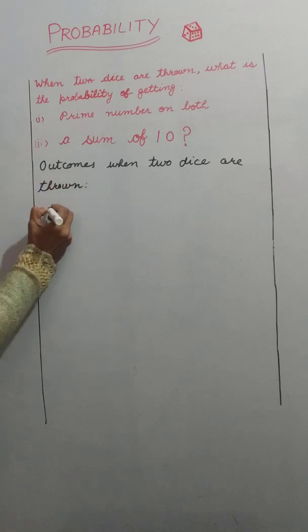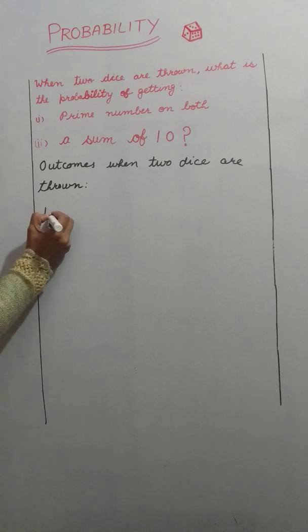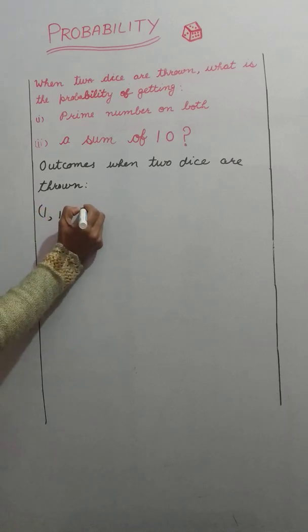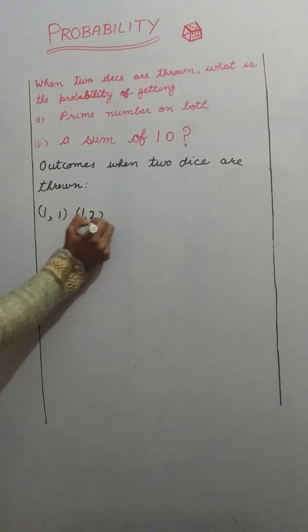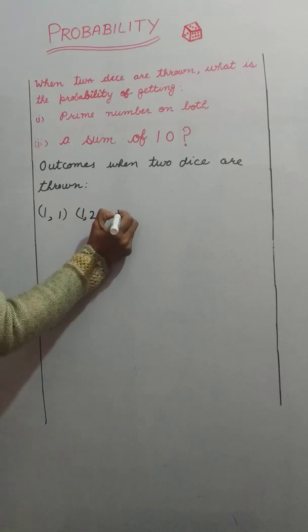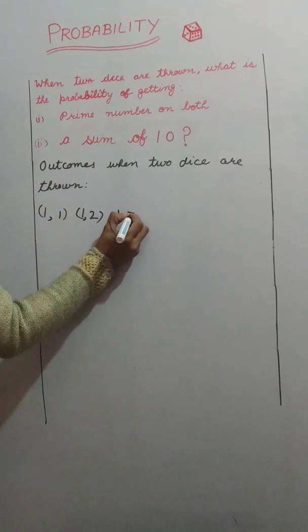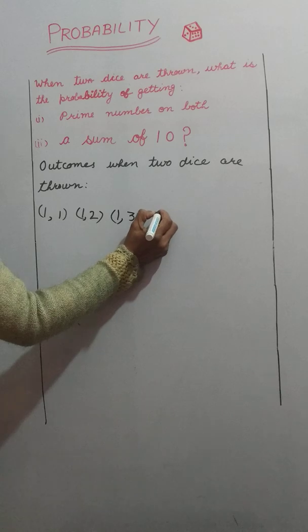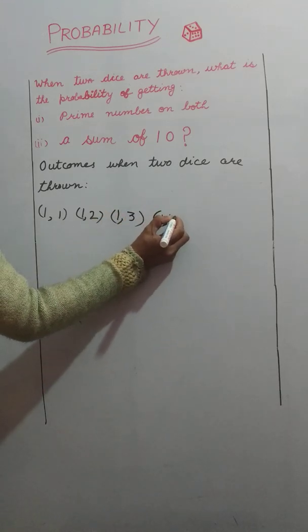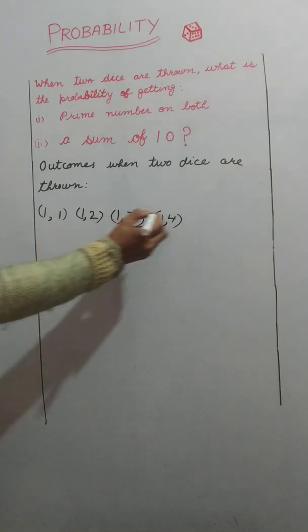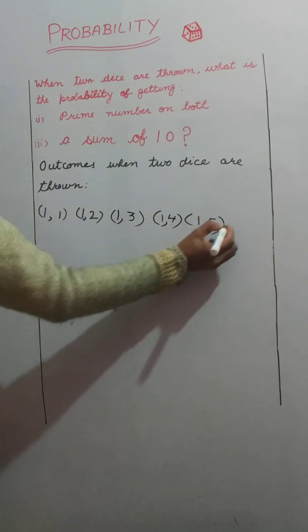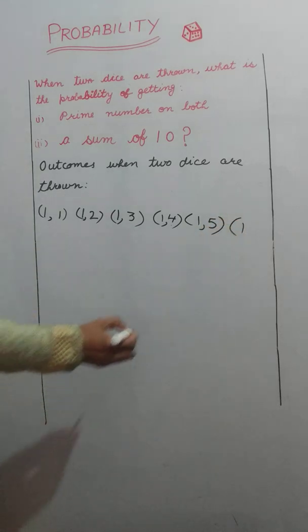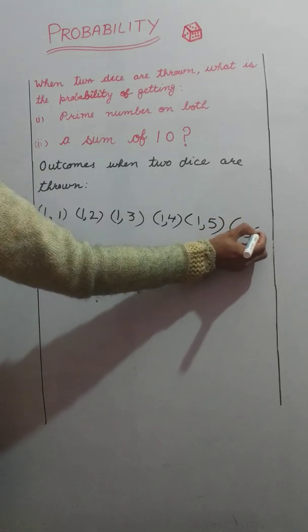The outcomes may be: 1 on the first die and 1 on the second die; 1 on the first and 2 on the second; 1 and 3; 1 and 4; 1 and 5; 1 and 6.